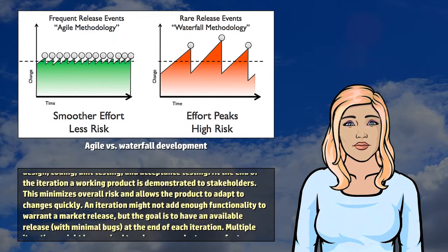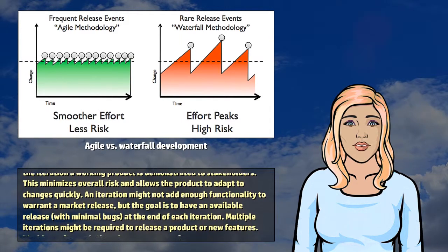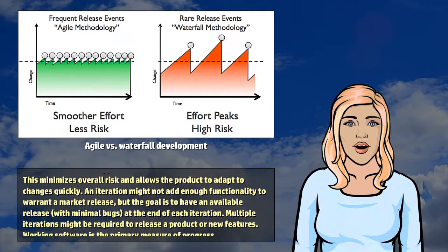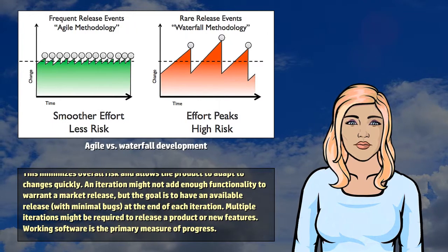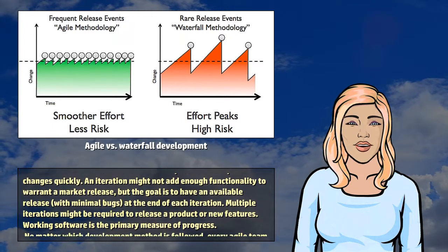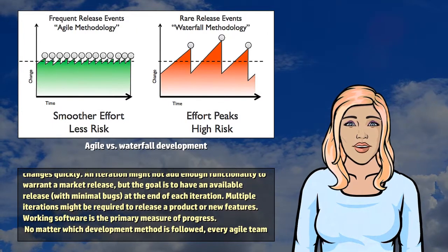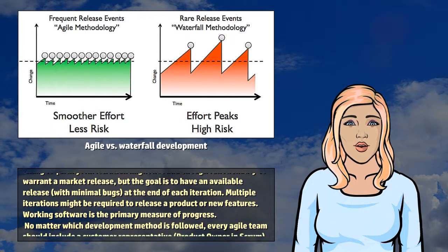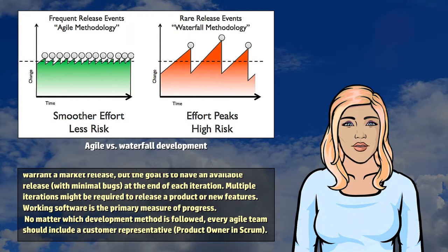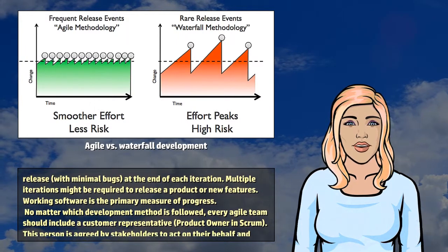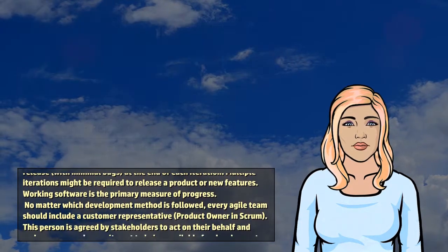This minimizes overall risk and allows the product to adapt to changes quickly. An iteration might not add enough functionality to warrant a market release, but the goal is to have an available release, with minimal bugs, at the end of each iteration. Multiple iterations might be required to release a product or new features. Working software is the primary measure of progress.